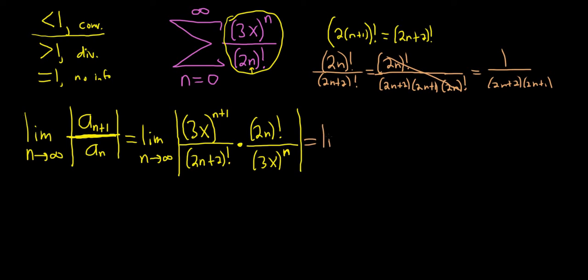So this is equal to the limit as n goes to infinity of the absolute value. So on the bottom we have 2n plus 2, 2n plus 1. Really, really clever trick with the factorials there, right? So yeah, good stuff.